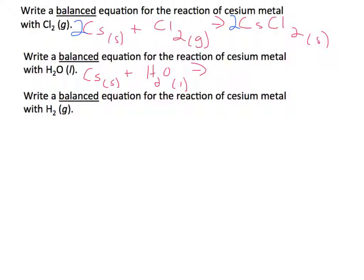which is then going to form a metal hydroxide, which is cesium hydroxide, which is aqueous, plus hydrogen gas. And so you'll notice I already put in the 2 for the cesium hydroxide, which helps balance this equation. We need a 2 there and a 2 there.